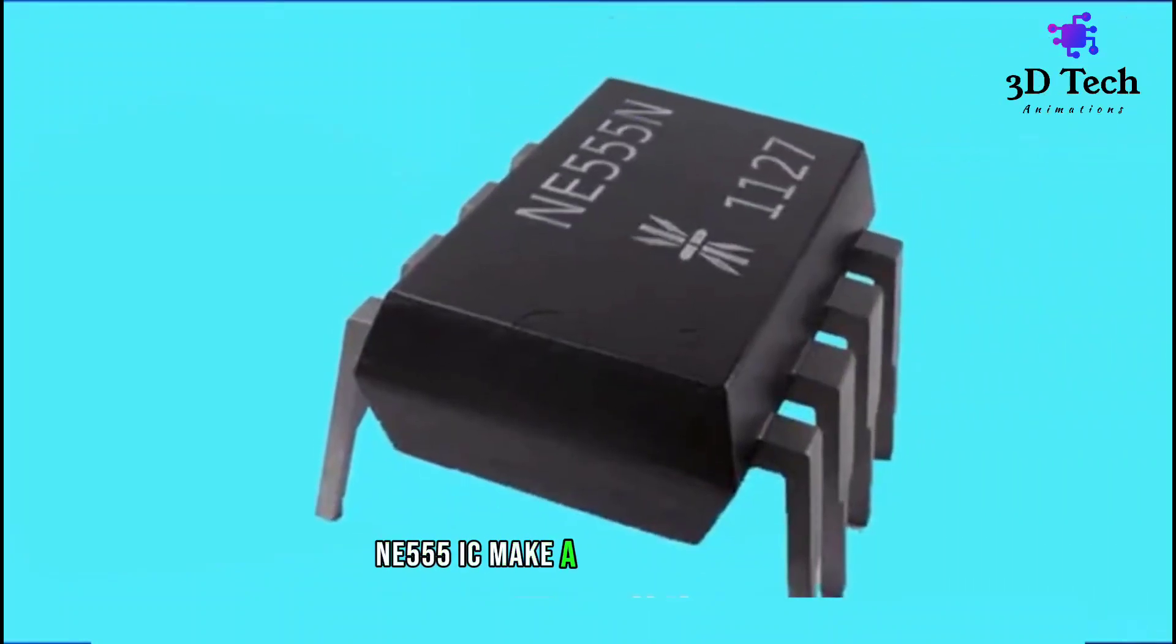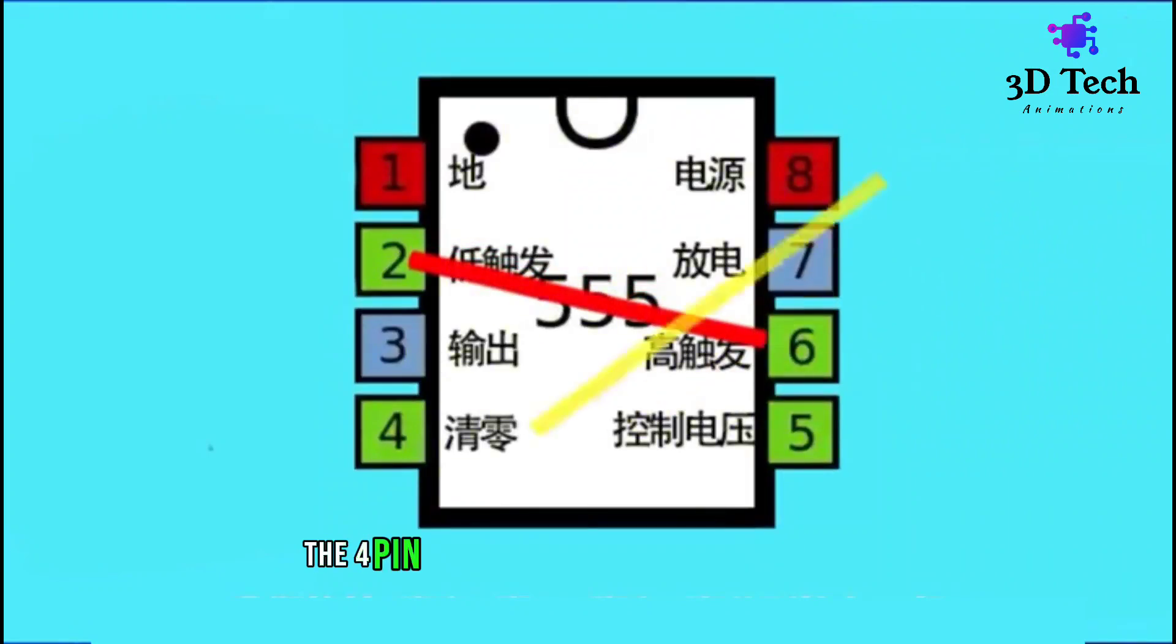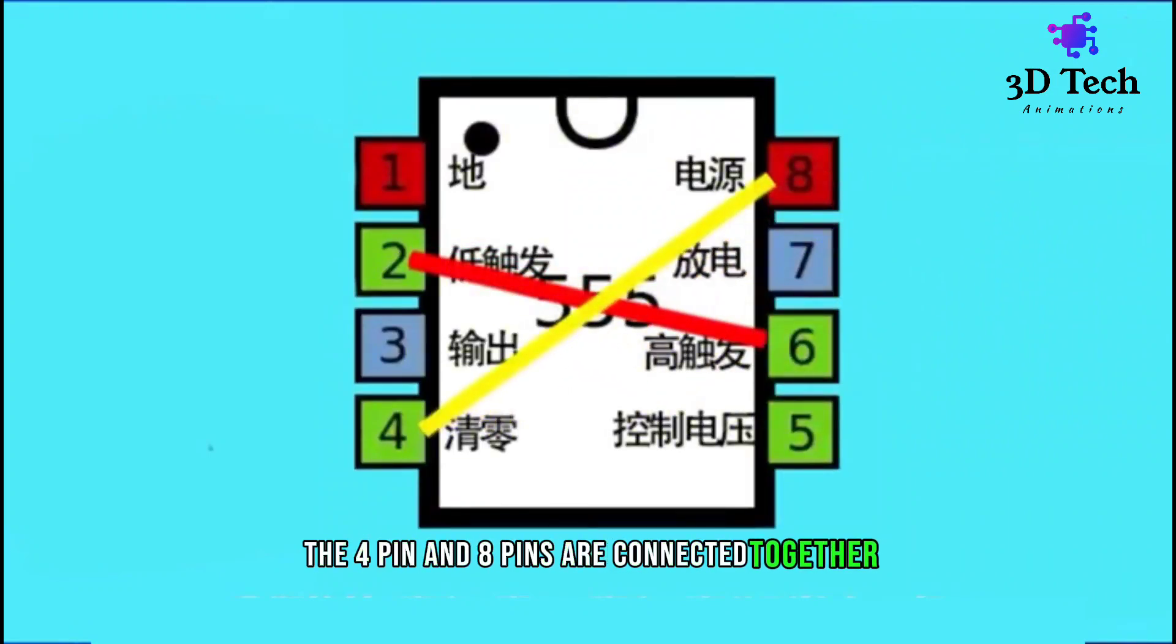Now, let me tell you how to make this using any 555 IC. Make a jumper to 2-6 pin. The 4 pin and 8 pins are connected together respectively.